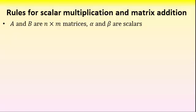Listing these rules, A and B will now be arbitrary matrices but with the same dimension n by m, and the Greek characters alpha and beta will be arbitrary scalars.